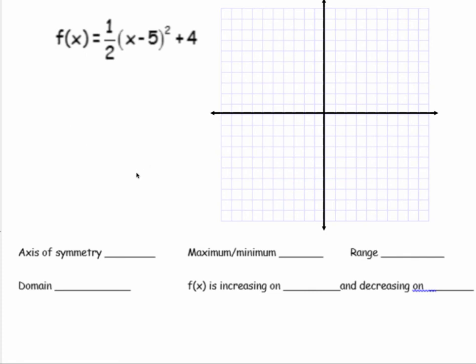Now, in this equation right here, I can read off the axis of symmetry. Well, I prefer actually to start with reading off the vertex. The vertex is (5, 4). So the axis of symmetry is x = 5.